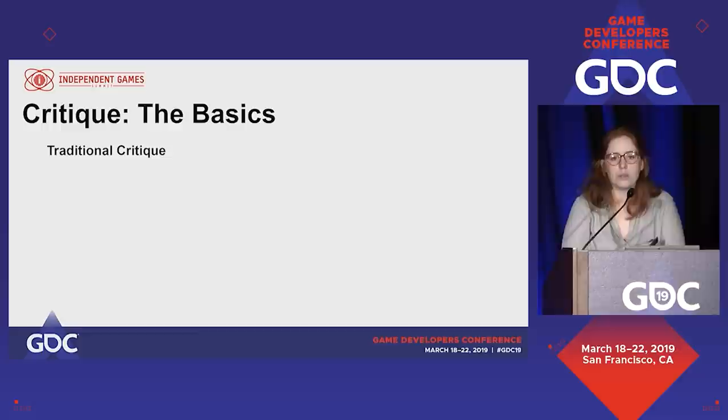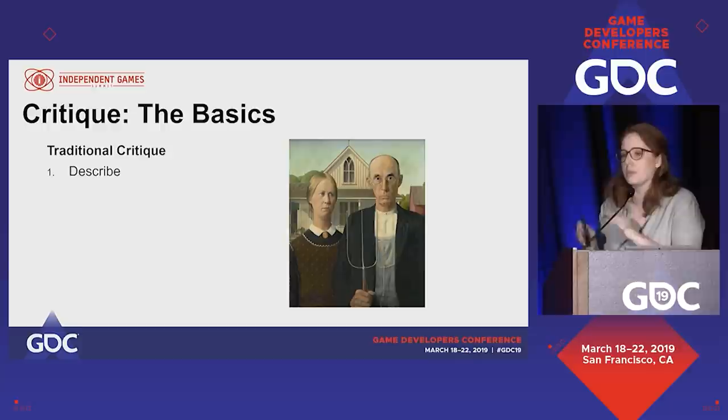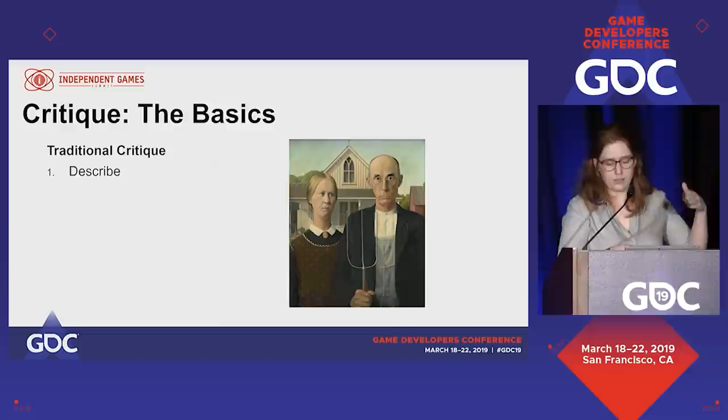In traditional critique there's a four-step structure. You start by describing it — a literal description of content. You look at an image and say there's two people, one of them's holding a pitchfork, they're in front of a building, they're both looking pretty frowny. Very content-based. And then you analyze.